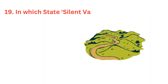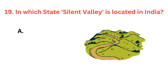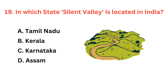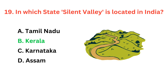In which state is Silent Valley located in India? The correct answer is option B, Kerala.